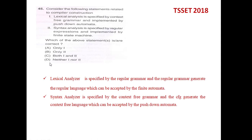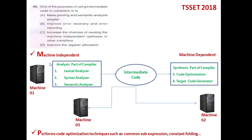The next question, number 46, asks: one of the purposes of using the intermediate code in compilers is — this is also a question related to compiler construction. He is asking about what is the use of the IR code in a compiler.